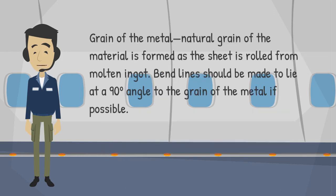Grain of the metal: the natural grain of the material is formed as the sheet is rolled from molten ingot. Bend lines should be made to lie at a 90-degree angle to the grain of the metal if possible.